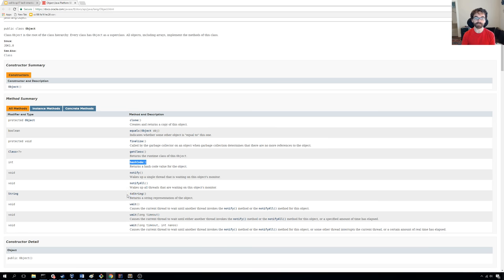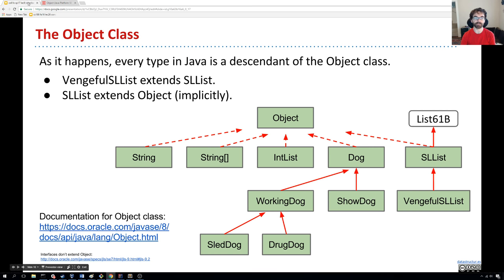The other one we'll use is hash code. And actually, the other one we'll use is to string. Those three are really important. The others, not so much. And we'll talk about what this one means later. This one, hopefully, is pretty self-explanatory. And we'll be doing some of these fairly soon.